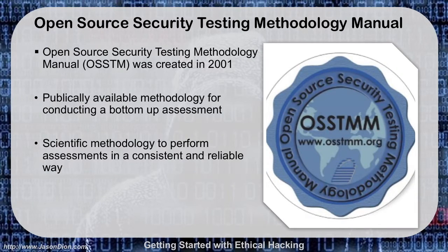So how do we do this? One of the ways people use is what's called the Open Source Security Testing Manual. You can go to osstmm.org — it's publicly available and is for a bottom-up assessment. This was created in 2001. It uses scientific methodology to do your assessment in a consistent and reliable way. You don't have to use this; there are many other methods out there. But this is one that is open source and available for you.